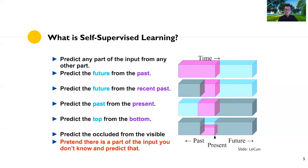For example, you can think about video: you can predict the future by looking at the past, or just look at the recent past — the recent few frames — to predict the future. Instead of looking at the past to predict the future, you can also use the present to predict the past, and also predict the top from the bottom, or predict the occluded from the visible components in images or videos.